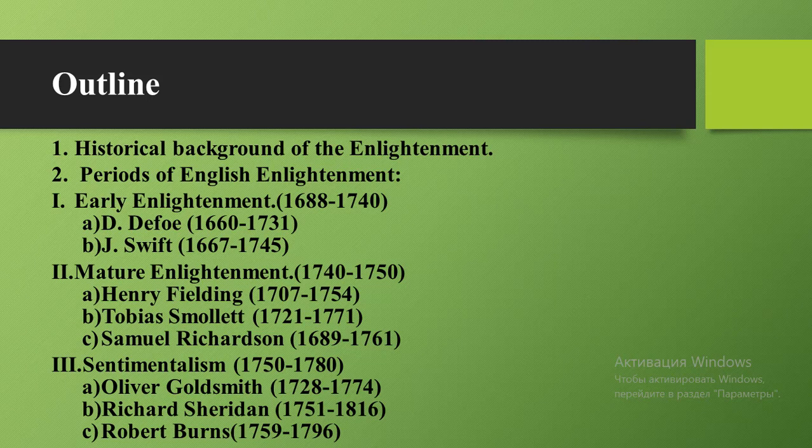The first period is early Enlightenment, with main representatives Daniel Defoe and Jonathan Swift. The second is mature Enlightenment, represented by Henry Fielding, Tobias Smollett, and Samuel Richardson. The third period is sentimentalism, with bright representatives Oliver Goldsmith, Richard Sheridan, and Robert Burns.